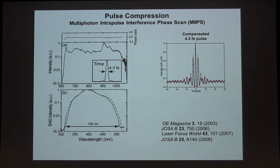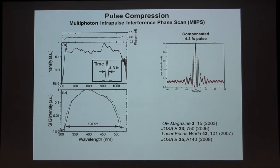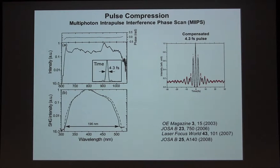Just very briefly about pulse compression: we have been developing a technique we call multiphoton interpulse interference phase scan. We're able to take lasers with this kind of spectrum — over 400 nanometers of bandwidth — and compress them. One measure of success is how the second harmonic looks. When you have really broadband second harmonic with good conversion efficiency, it means you have pretty good phase control. We're missing a little bit on the edges, limited by the crystal. You can compare experiments and theory and see that things are quite good.